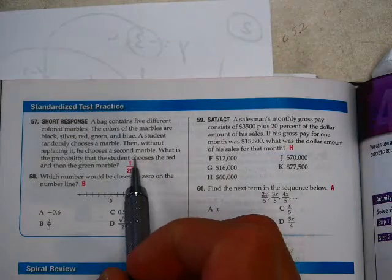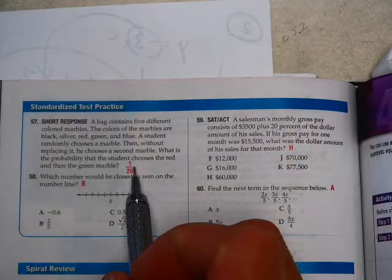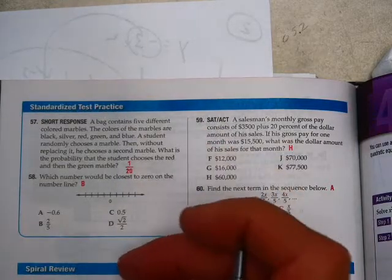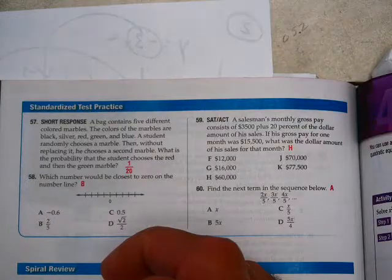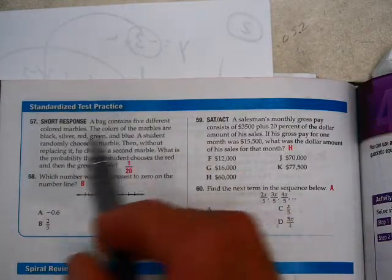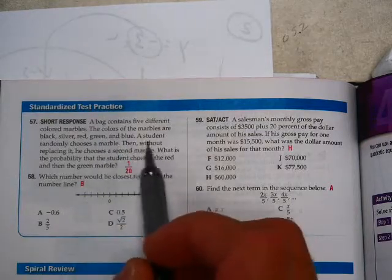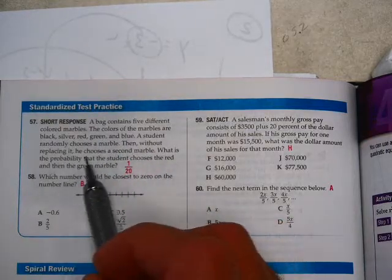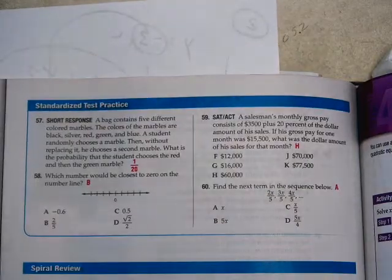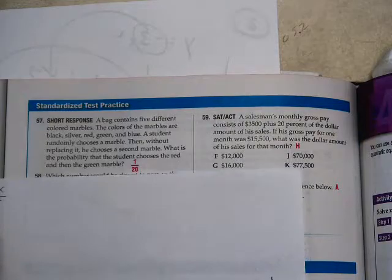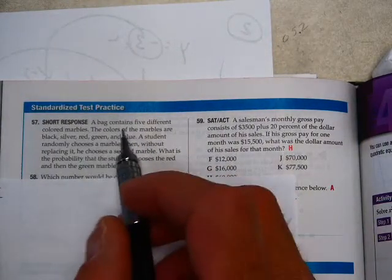Anything on the next page? 57 through 60. Problem 60. Find the next term in the sequence below. It looks like it's 2x, 3x, 4x, 5x. I see what the issue was here. So, the next term would be 5x. And the bottom, 5, 5, 5, 5. And then they just cancel out. You get x. I kind of like that one, because there's a little cancel in there, too.